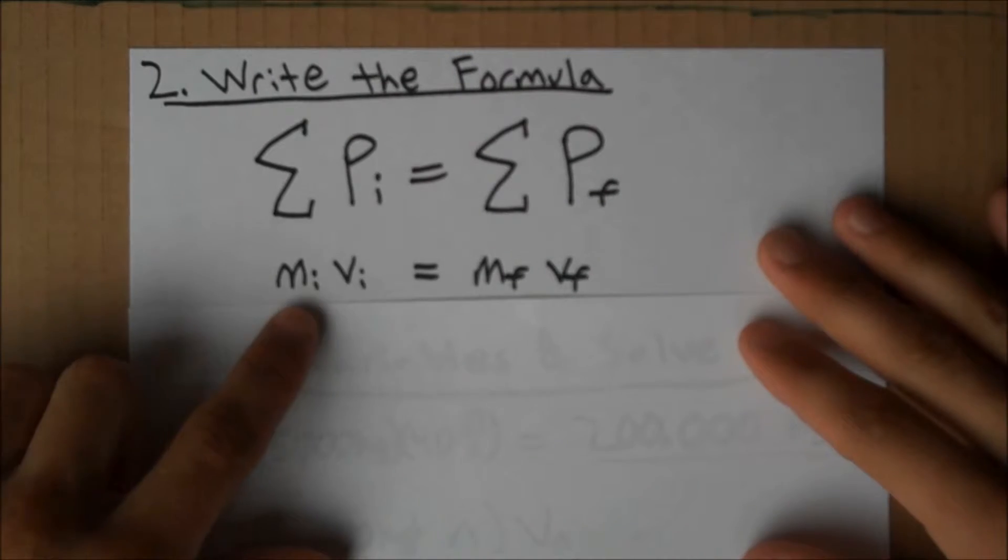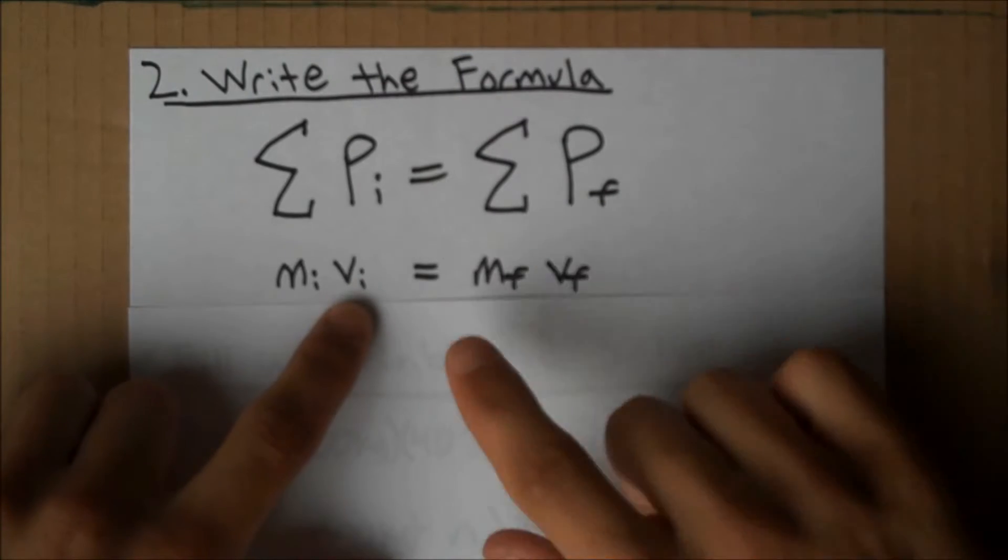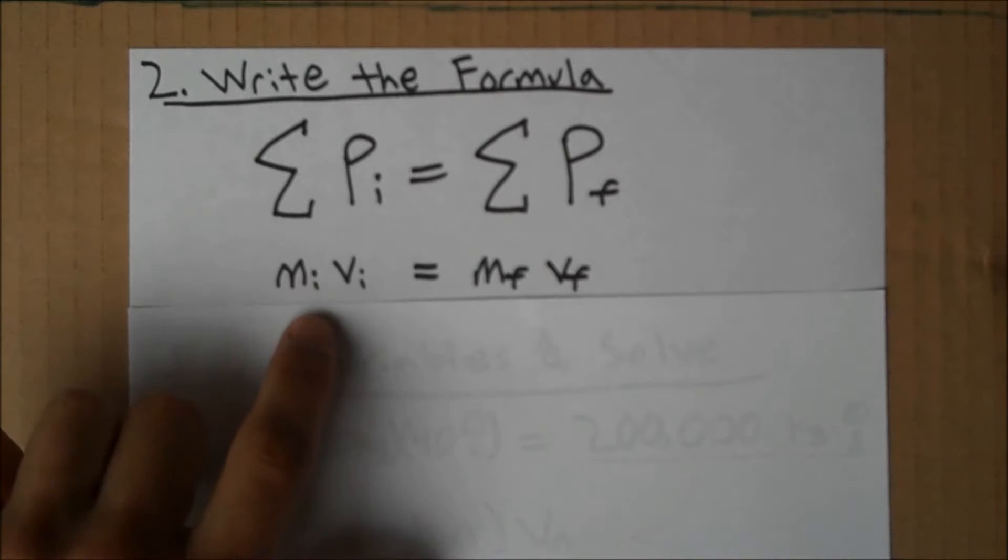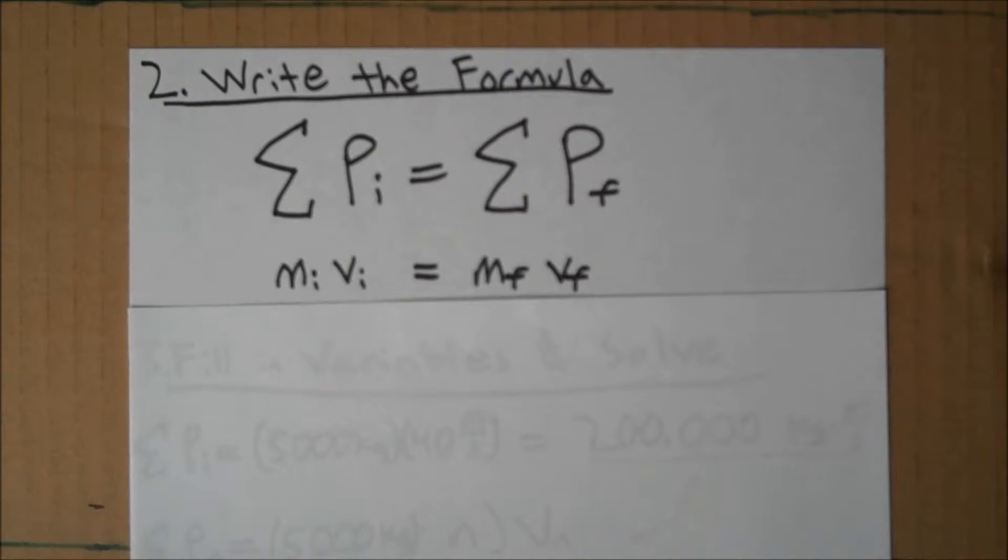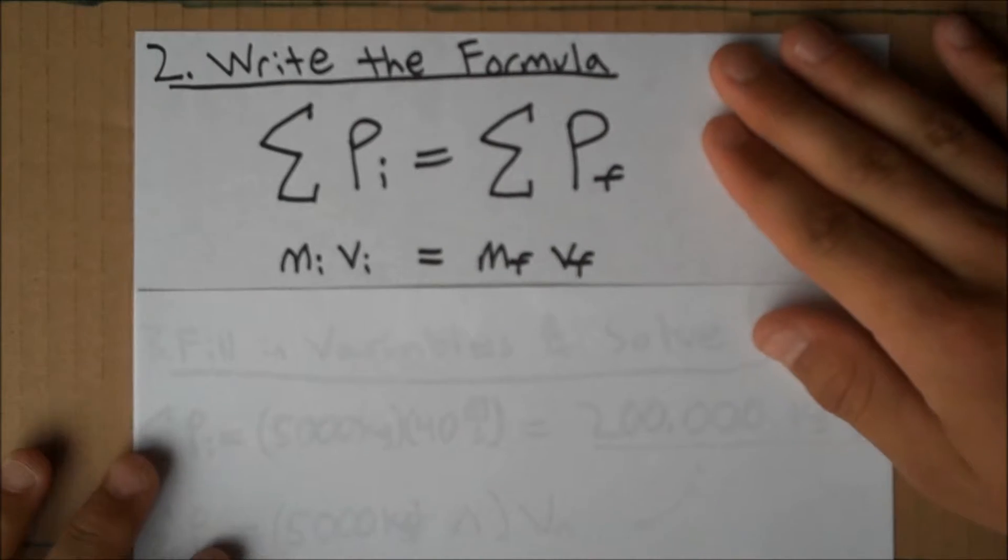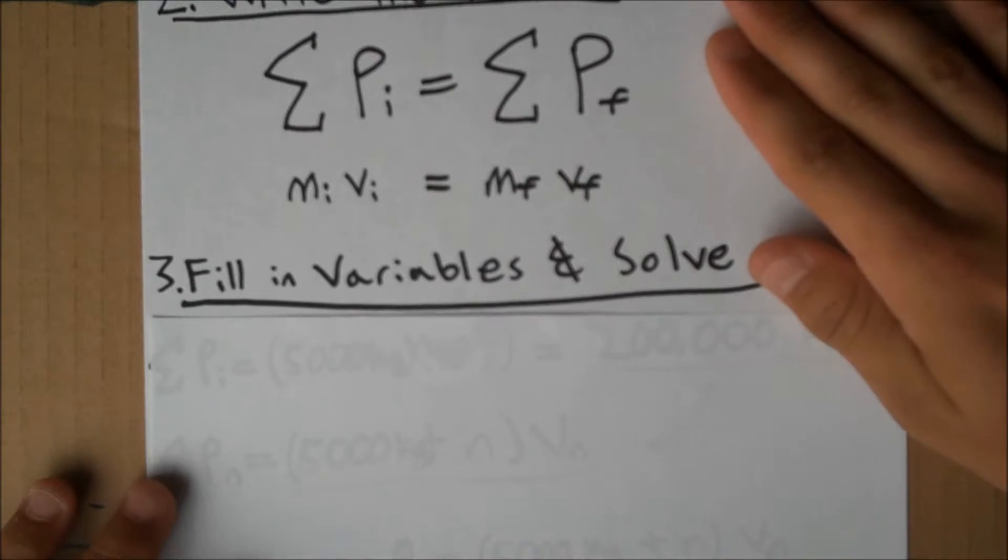Momentum is given by mass times velocity in both cases. We use mass initial and mass final because mass actually will be changing when they stick to the bulldozer.